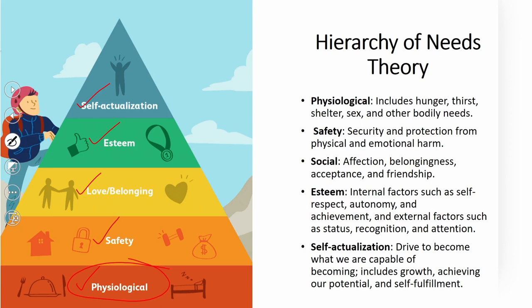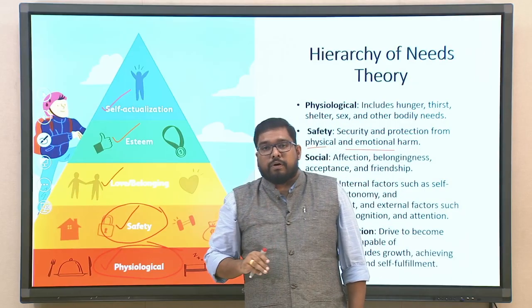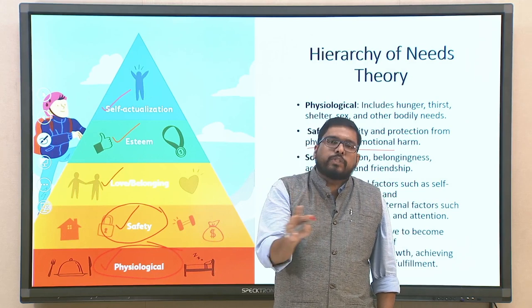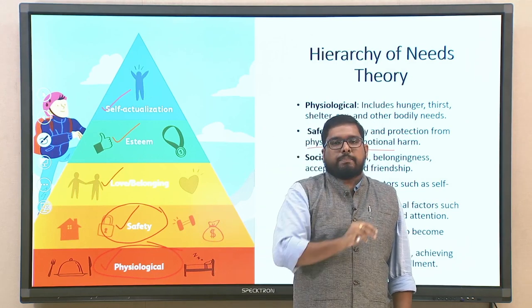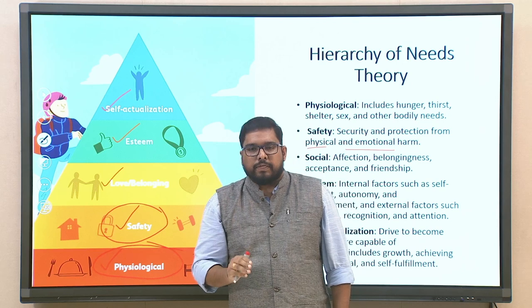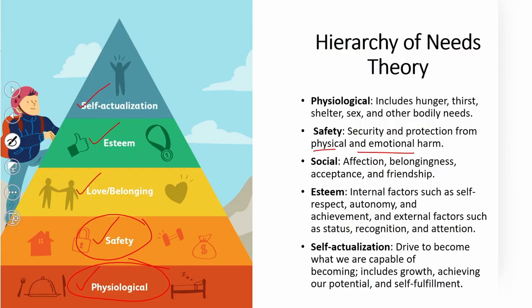Safety looks into protection from physical and emotional harm — sometimes there may be no physical issues, but emotional damage can occur. Once the safety need is satisfied, it moves to the third level: love, belonging, and social needs, which include affection, belongingness, acceptance, and friendship.